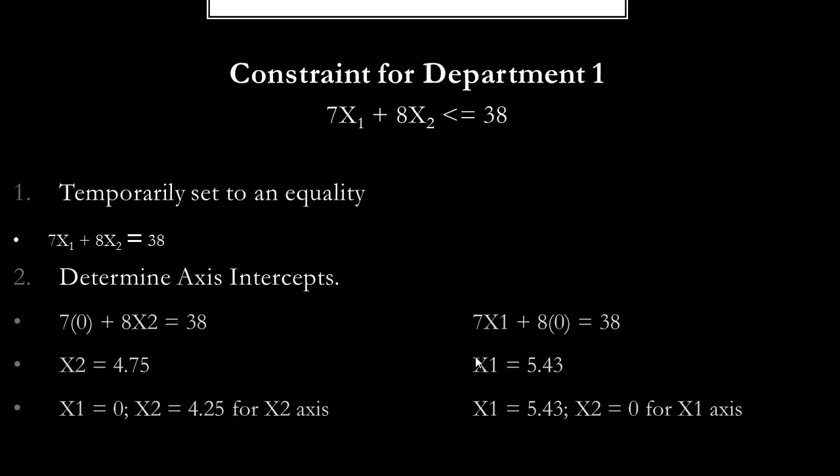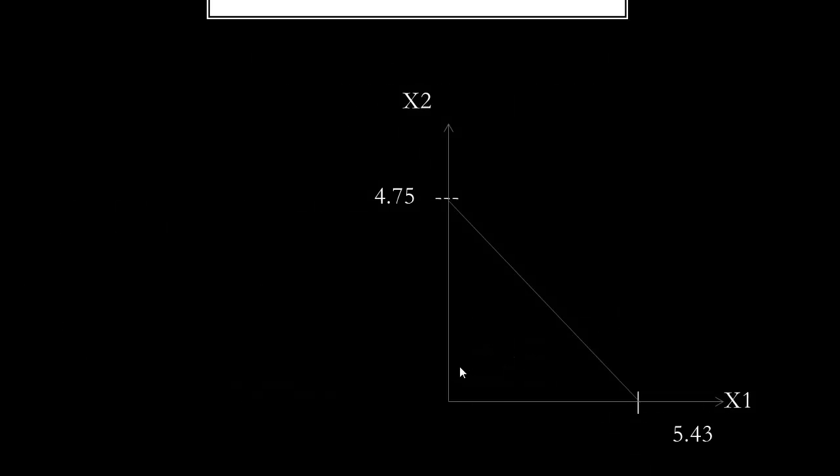For constraint 1, which is department 1, first we change the less than or equal to to an equal to. Second, we found the intercepts for the x1 and x2 axis. Third, we plot the linear or straight line of the graph using the axis intercept points.